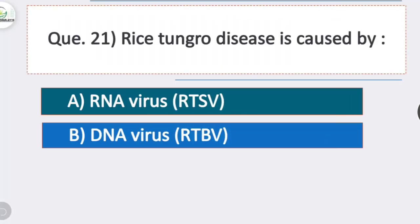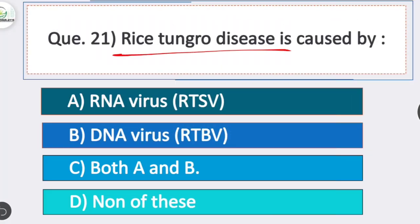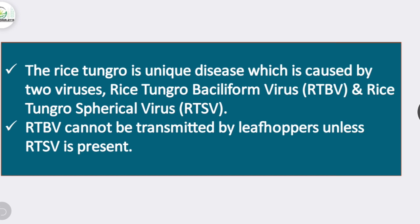Question 21: rice tumor disease is caused by? Option C is correct — both A and B, meaning RNA virus RTSV and also DNA virus RTVV. Rice tumor is a unique disease caused by two viruses: rice tumor bacilliform virus (RTBV) and rice tumor spherical virus (RTSV). RTBV cannot be transmitted by leafhoppers unless RTSV is present.